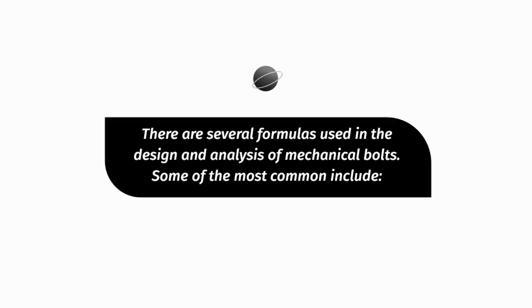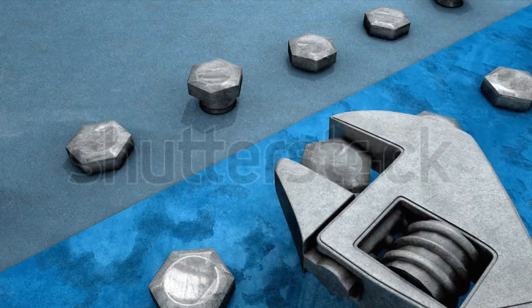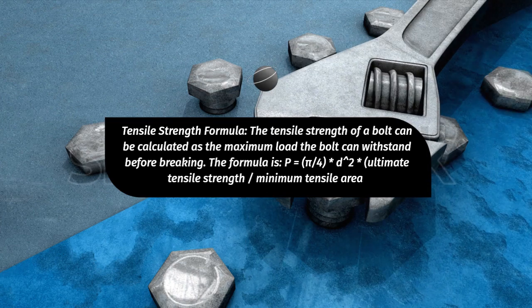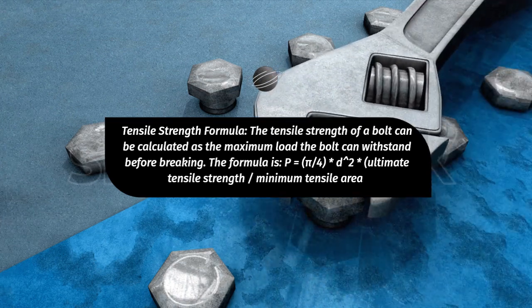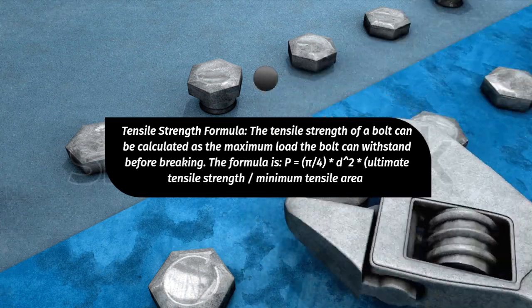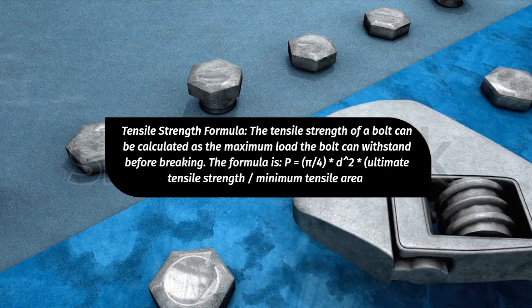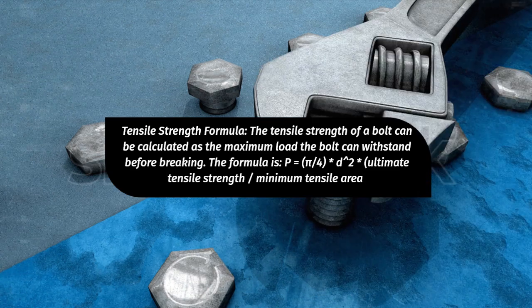Some of the most common include: Tensile strength formula — The tensile strength of a bolt can be calculated as the maximum load the bolt can withstand before breaking. The formula is: P = (π/4) × d² × ultimate tensile strength × minimum tensile area.